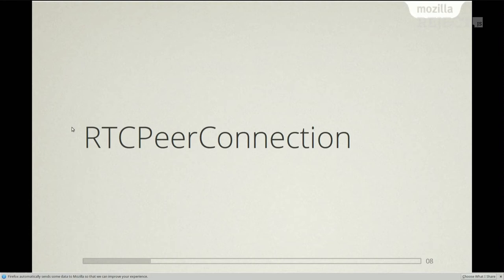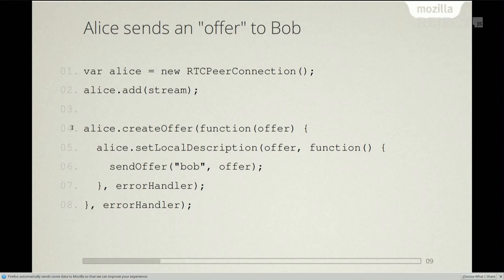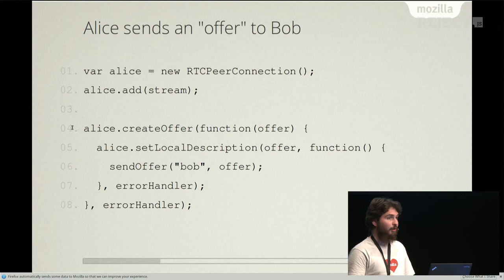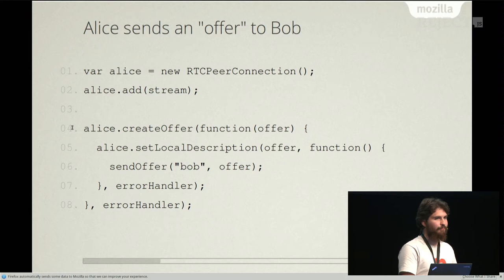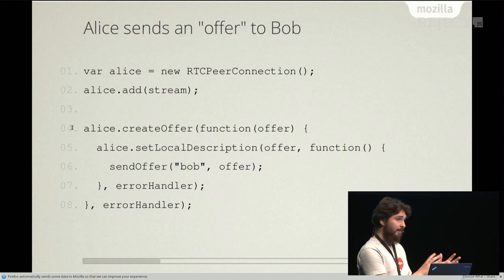Peer connection is a bit more complicated. Here we have Alice that wants to communicate with Bob. Alice will create a peer connection, add the stream to it, and then create an offer and send it to Bob. Offers and answers are descriptions — what we call descriptions — used to share information between the two user agents before they actually make the peer-to-peer connection. They are payloads, and I use the term payloads because in theory you should not look at what is in there; you don't need to change that. For a starter, just consider them as payloads exchanged between people.